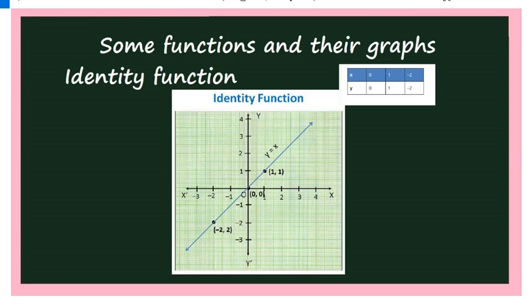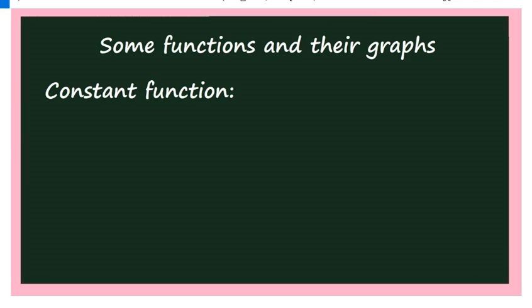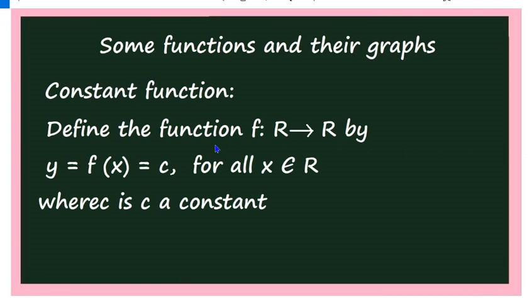Next, let us look at the constant function. The definition is: define the function f from R to R by y = f(x) = c, for all x belonging to R, where c is a constant. A constant is a fixed value — it may be 2, π, or any real number, but once chosen it is fixed. That is what is called a constant.